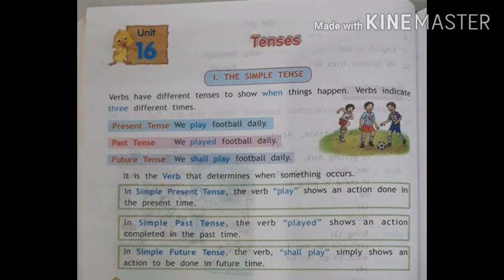In the first box, in simple present tense, the verb 'play' shows an action done in the present time. In the second, the simple past tense, the verb 'played' shows an action completed in the past time. In the third box, in simple future tense, the verb 'shall play' shows an action to be done in future time. So we understand the three time periods, known as present tense, past tense, or future tense.